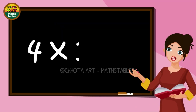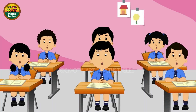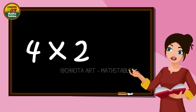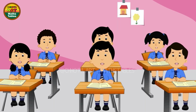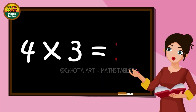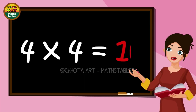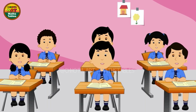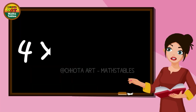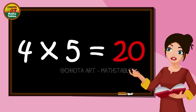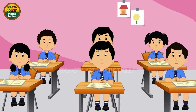4 × 1 = 4, 4 × 2 = 8, 4 × 3 = 12, 4 × 4 = 16, 4 × 5 = 20.